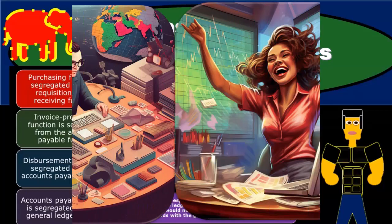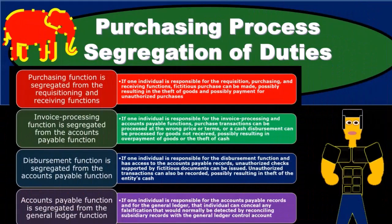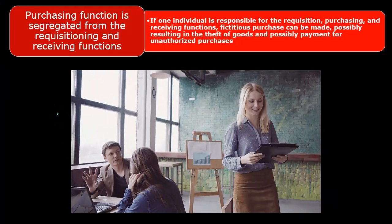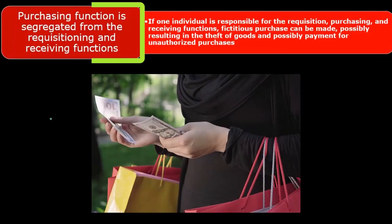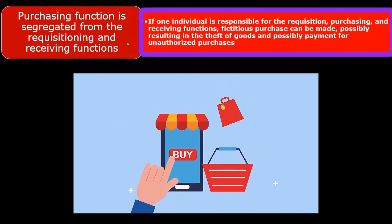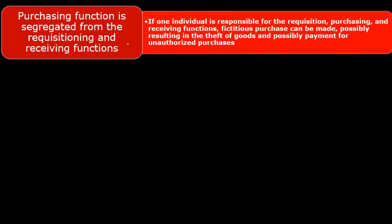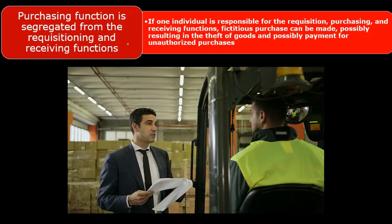We, as the auditor, are concerned with internal controls mainly as they relate to the ability to make financial statements more properly stated. So, internal controls related to the purchasing process: the purchasing function is segregated from the requisitioning and receiving function. If one individual is responsible for the requisition — requesting some item within the organization — and they're also in charge of the purchasing process with the vendor and in charge of receiving inventory in the warehouse, it's quite possible — we're almost begging for it to happen — that a fictitious purchase can be made.